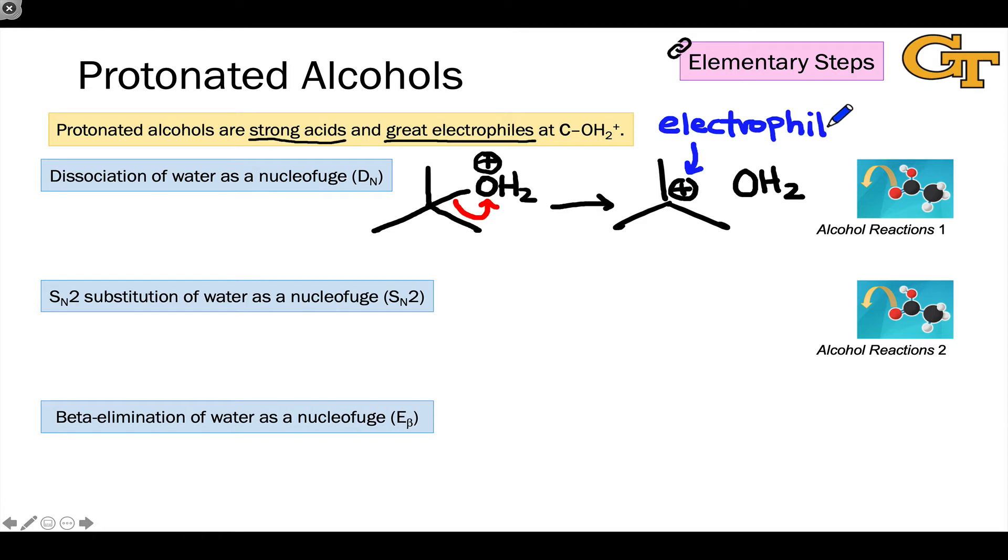For example, this tert-butyl cation can be attacked by a different nucleophile in an SN1 type process.